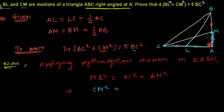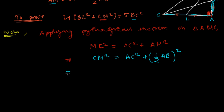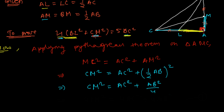Since AM is half of AB, we substitute: CM² = AC² + (AB/2)² = AC² + AB²/4. Multiplying both sides by 4, we get 4CM² = 4AC² + AB². Let's call this Equation 1.